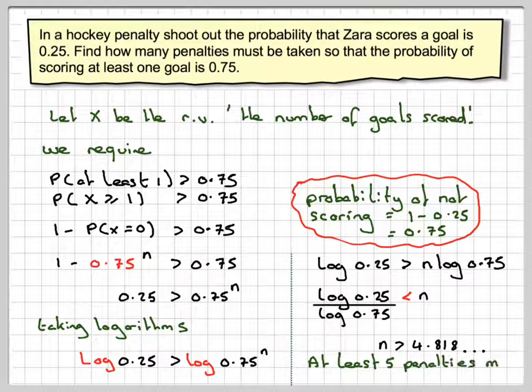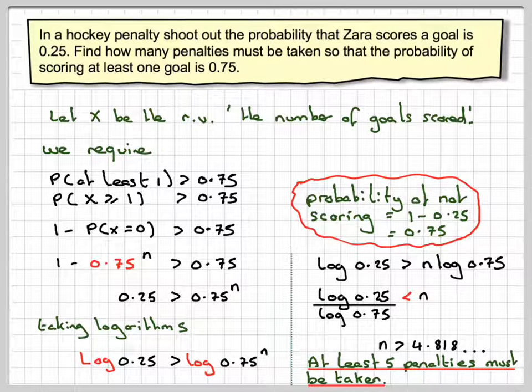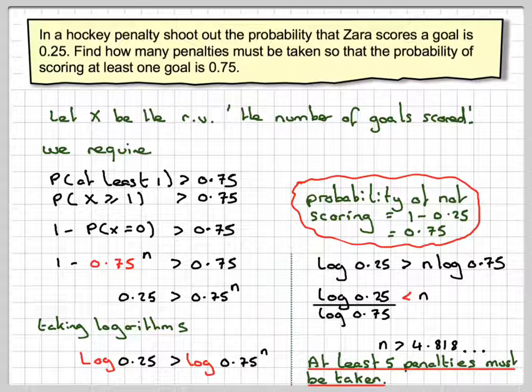Therefore, at least five penalties must be taken because it's a discrete random variable.